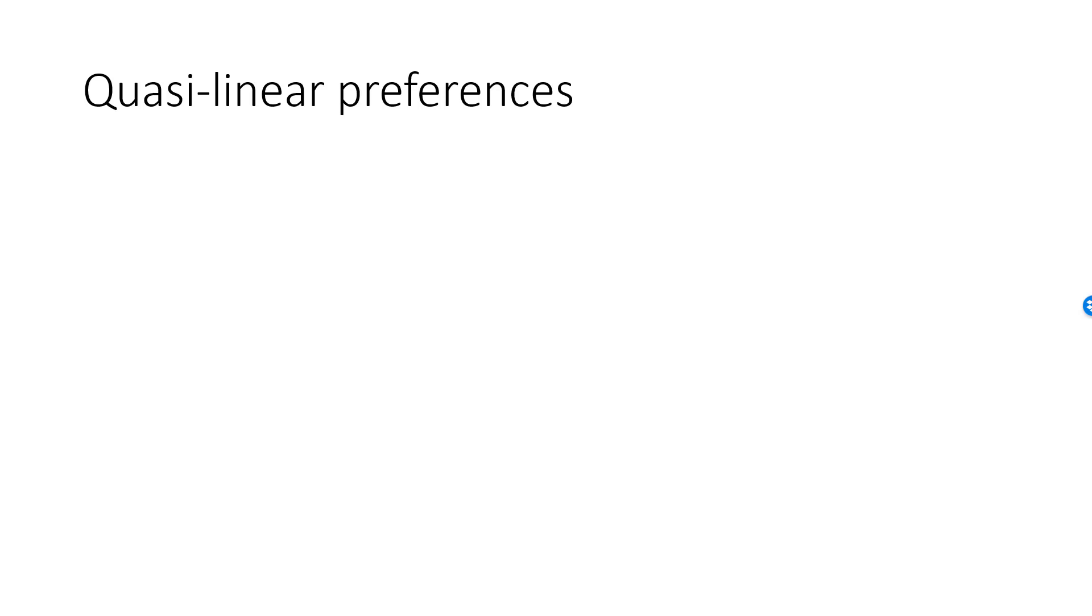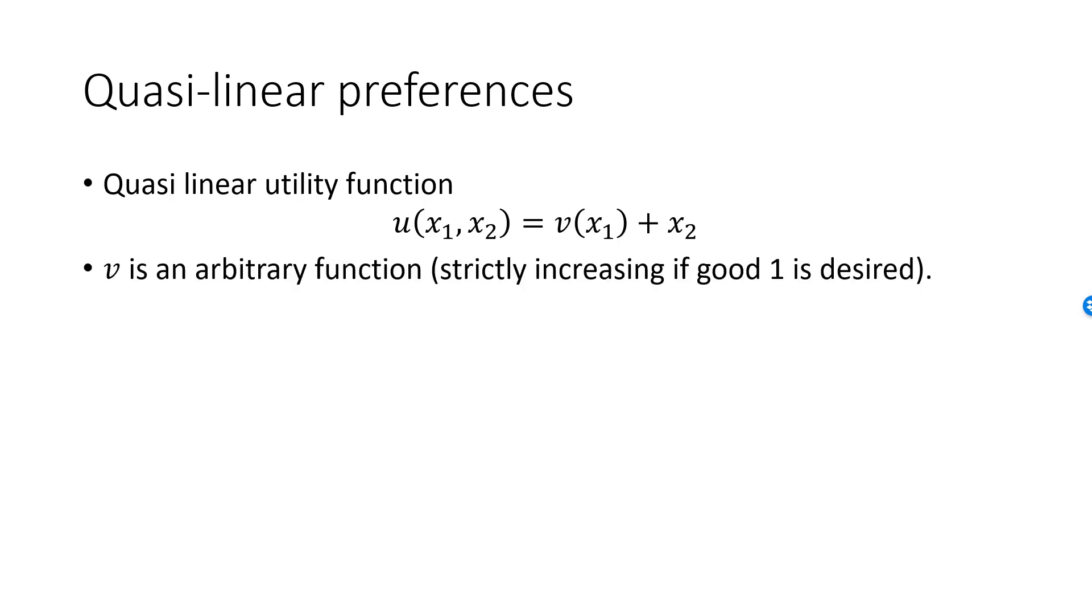We say that a utility function is quasi-linear if it can be written as $v(x_1) + x_2$, where $v$ can be any function. For example, $u = \sqrt{x_1} + x_2$ is quasi-linear.